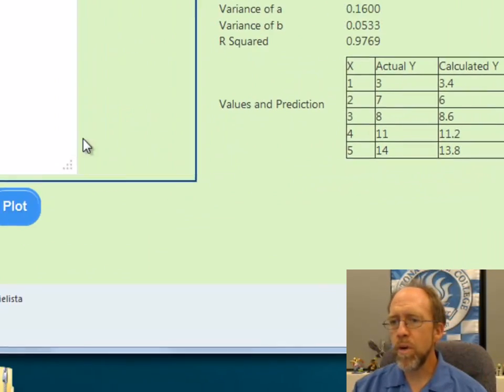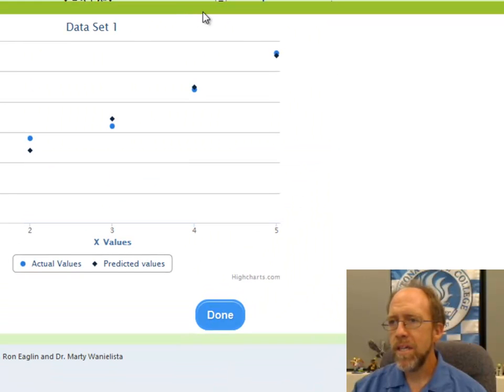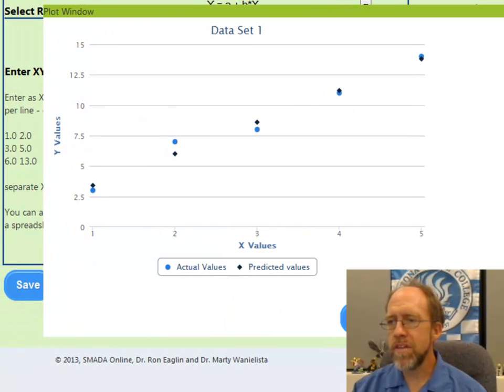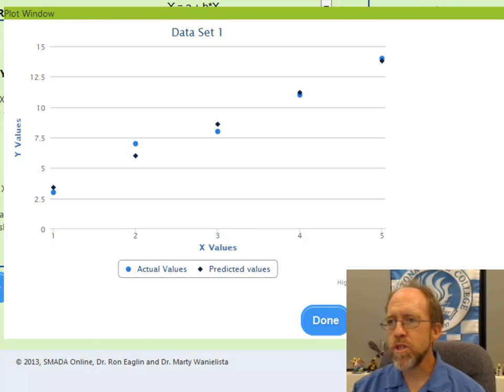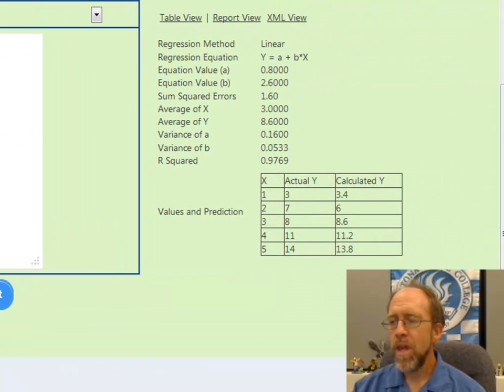I also have the ability to do one other thing here, I'll move this back over. I have the ability to plot the data. I'm going to move my plot over a little bit here. So you can see the data set one and its plot of actual versus predicted values. We can close that by clicking done.